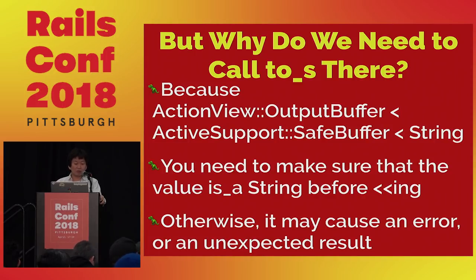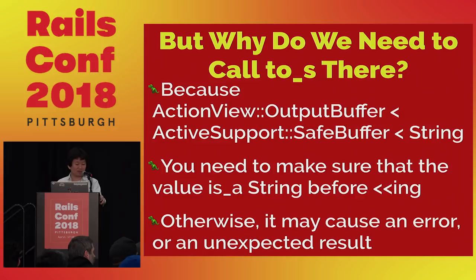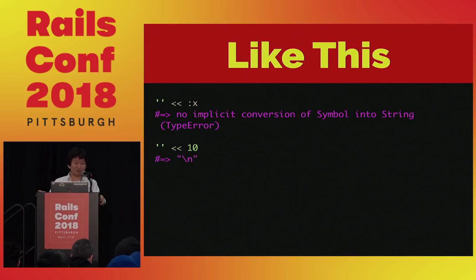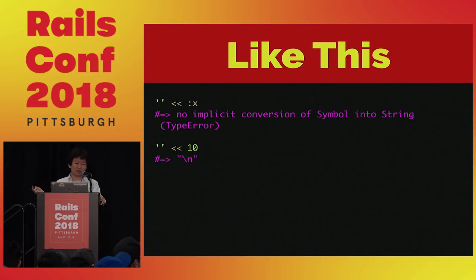Why does Action View call .to_s inside the buffer? Because output_buffer is a string, and you need to make sure anything added to the string is actually a string — otherwise you get unexpected behavior. For example, you can't append a symbol, and appending an integer would be translated as a code point. So .to_s must be called before appending anything.